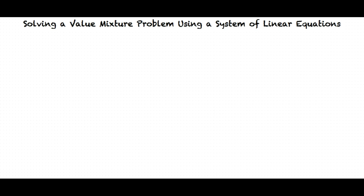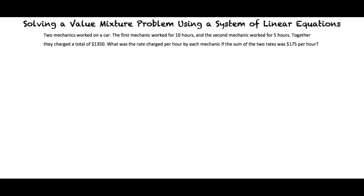Let's start with an example to get an idea of what a value-mixture problem might look like. Two mechanics worked on a car. The first mechanic worked for 10 hours, and the second mechanic worked for 5 hours. Together they charged a total of $1,350. What was the rate charged per hour by each mechanic if the sum of the two rates was $175 per hour?